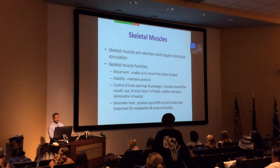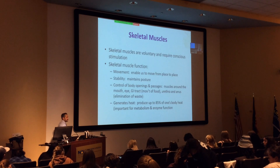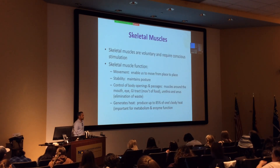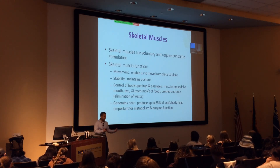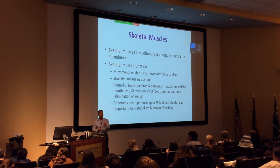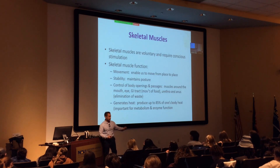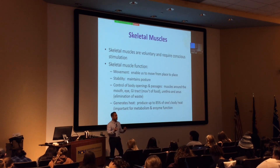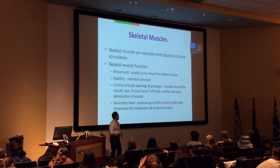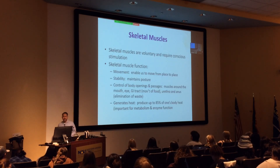Muscle physiology takes us back to earlier in the semester when we talked about muscles in lab - insertion, origin, function. Here we're getting into the physiology. Skeletal muscles are voluntary and require conscious stimulation for the most part. Reflexes are a unique category - somatic reflex arc, autonomic reflex arc. Examples like micturition and baroreceptor reflexes are autonomic. But excluding reflexes, muscles are under voluntary contraction.